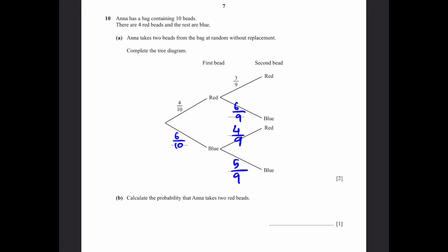Part B: Calculate the probability that Ana takes 2 red beads. That's 4 by 10 times 3 by 9 which is going to be 2 by 15 if we write it in simplified form. Since this is 12 by 90 and dividing both sides by 6, we get 2 by 15. That's the answer.